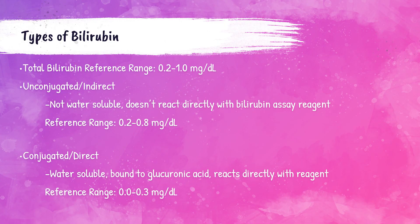Before we get into the indirect bilirubin calculation, let's just recap and review bilirubin as a whole. If you have not already checked out my liver function lecture, please go ahead and check that out before this video — I will link it in the description. Both total bilirubin and direct or conjugated bilirubin are measured directly by a clinical chemistry analyzer, and then the indirect bilirubin is produced by a calculation.